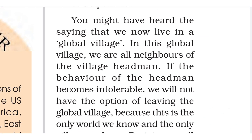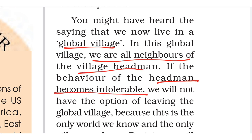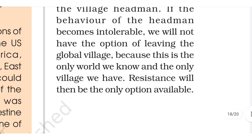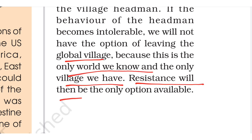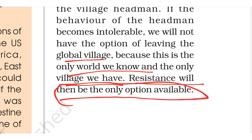We might even speak of a global village — Vasudeva Kutumbakam, meaning the world as a global home. In this global village, we are all neighbors, and the US is like the village headman. If the behavior of the headman becomes intolerable, we will not have the option of leaving the global village — this is the only world we know and the only village we have. Resistance will be the only option available. That is today's lecture on US hegemony. Thank you, and God bless you all — Jai Hind.